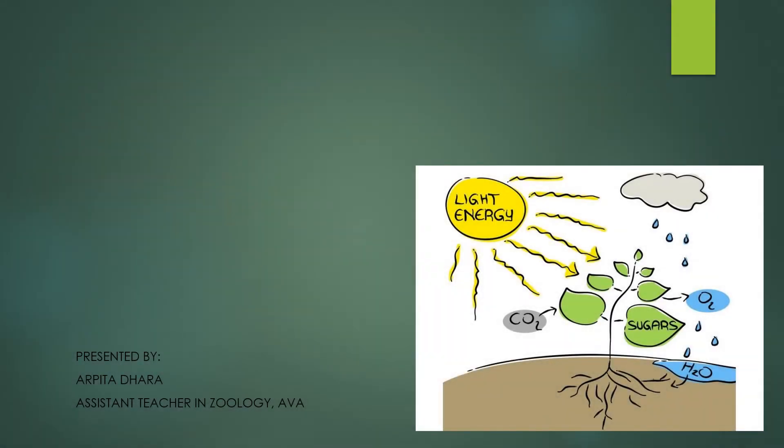Hello students. In the previous class we discussed about the process of photosynthesis and we came to know that the leaf is the main site of photosynthesis and we also know about the raw materials of photosynthesis. Today we are concerned about the factors that control the rate of photosynthesis and also the importance of photosynthesis in the environment.